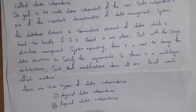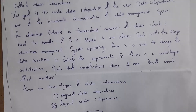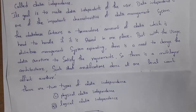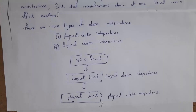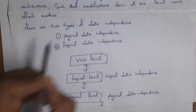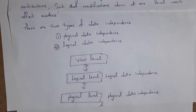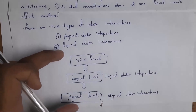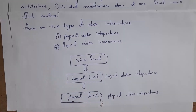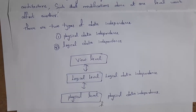In a database, we store complete data in one location in different tables, and we update a huge amount of data daily while satisfying user requirements. That is the reason why we need this multi-layer architecture. In multi-layer architecture, modifications done at one level will not affect other levels. There are two types of data independency: physical data independency and logical data independency.